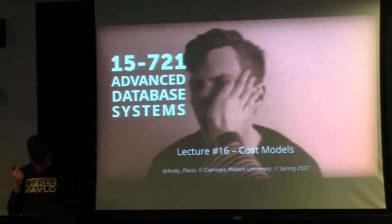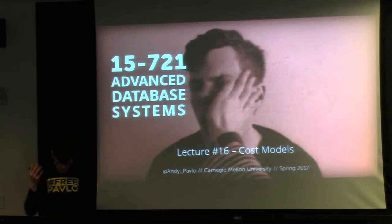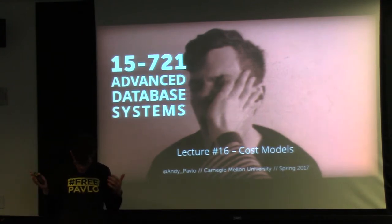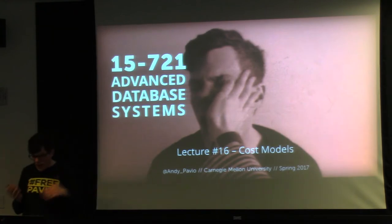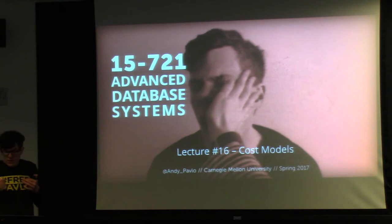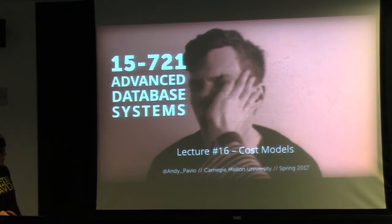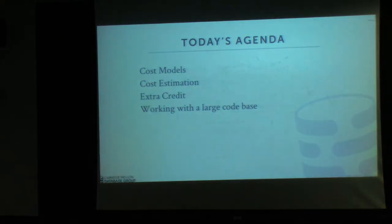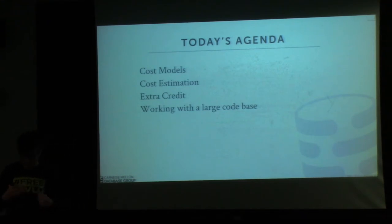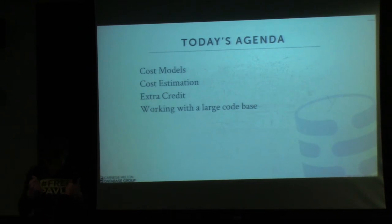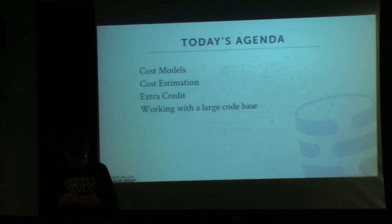Today we're going to be talking about cost models. This is the part of the query optimizer that I've skipped past in the last two lectures, just assuming there's going to be something that tells us whether one query is better than another. What we're going to talk about today is how you actually do that calculation to determine the cost estimate for a particular query. We'll start off talking about the different types of cost models, then how you do cost estimation using one of these models. The paper you read from the HyperGuys was a study showing just how wrong cost models can actually get.